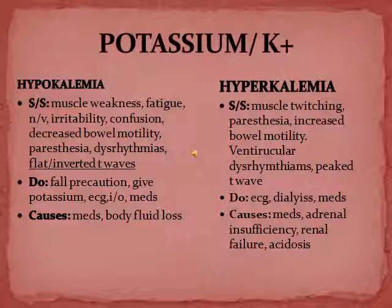For hyperkalemia — too much potassium — do an EKG because it can cause dysrhythmias. You can do dialysis to flush out the potassium and give medications. Causes of hypokalemia include diuretic medications that remove potassium and body fluid losses like vomiting. Causes of hyperkalemia include potassium-sparing medications, adrenal insufficiency, renal failure, and acidosis.